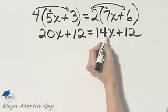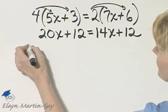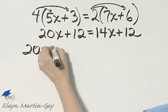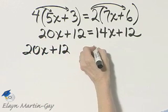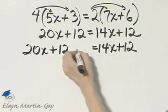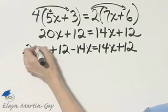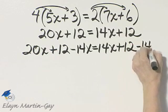So I'll begin by subtracting 14x from both sides. I'm going to rewrite the left side and the right side. And now let's subtract 14x on the left side and subtract 14x on the right side.